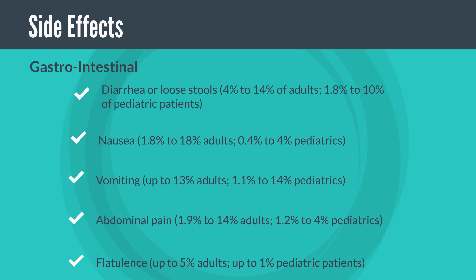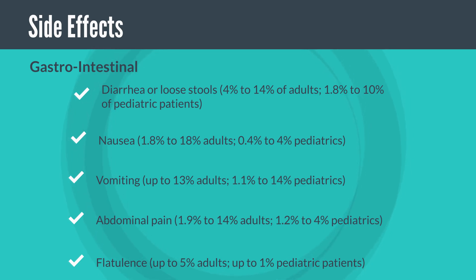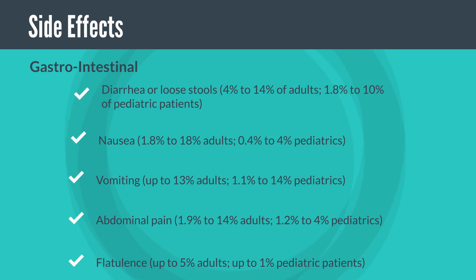Side effects of azithromycin are primarily gastrointestinal. There have been reports of diarrhea or loose stools occurring in about 4 to 14 percent of adults and about 1.8 to 10 percent of pediatric patients. Nausea, vomiting, and abdominal pain have also been reported, with abdominal pain occurring in about 1.9 to 14 percent of adults and 1.2 to 4 percent of pediatric patients. Flatulence occurs in up to 5 percent of adults and 1 percent of pediatric patients.